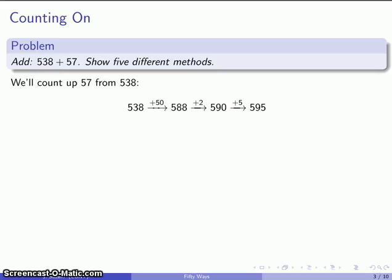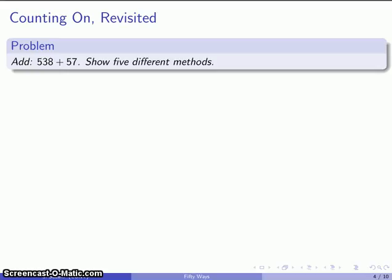Now, we say that there's 50 different ways of doing this, but here is something that's actually not a different method, but the same method done slightly differently. So rather than counting up from 538, 50, and 2, and 5, we might count up 538, up 2, to an easy number to work with,